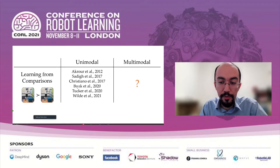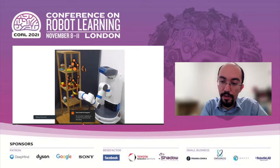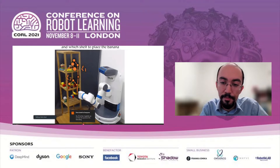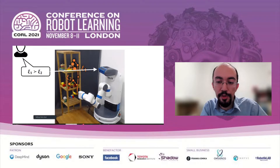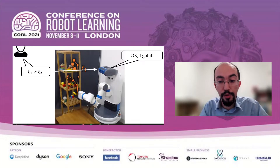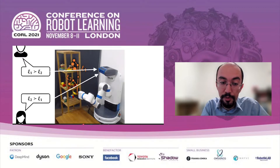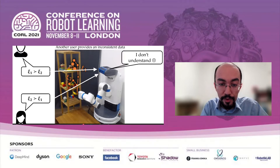Let me explain why multimodal rewards are more difficult with an example. We have a task where the fetch robot wants to learn how and which shelf to place the banana. Perhaps a user comes in and says they prefer the first trajectory, and fetch can handle this because it knows how to learn unimodal rewards. However, if a second user with different preferences shows up, then fetch will fail. In fact, it's doomed to fail.